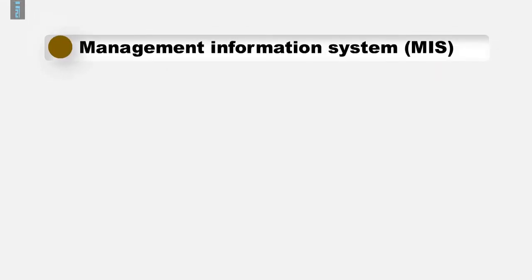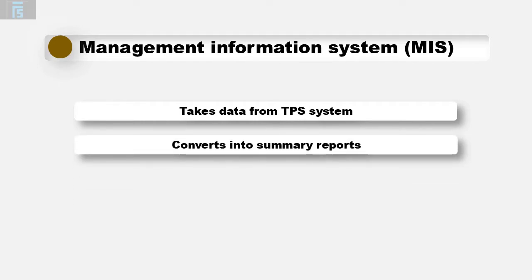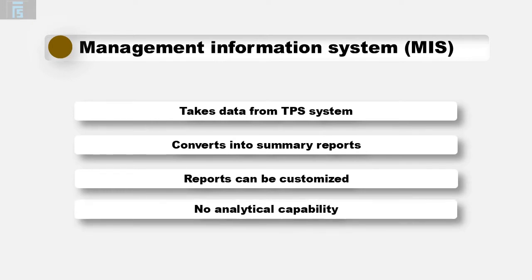The next system is the management information system, abbreviated to MIS. A management information system has the ability to take data from the TPS system and convert it into summary or exception reports for decision making. Some management information systems allow users to generate customised reports, for example breaking down sales into product type, region, salesperson, etc. Most have different display choices, e.g. graphical or tabular. It is important to note that a management information system generally doesn't have any analytical capability.